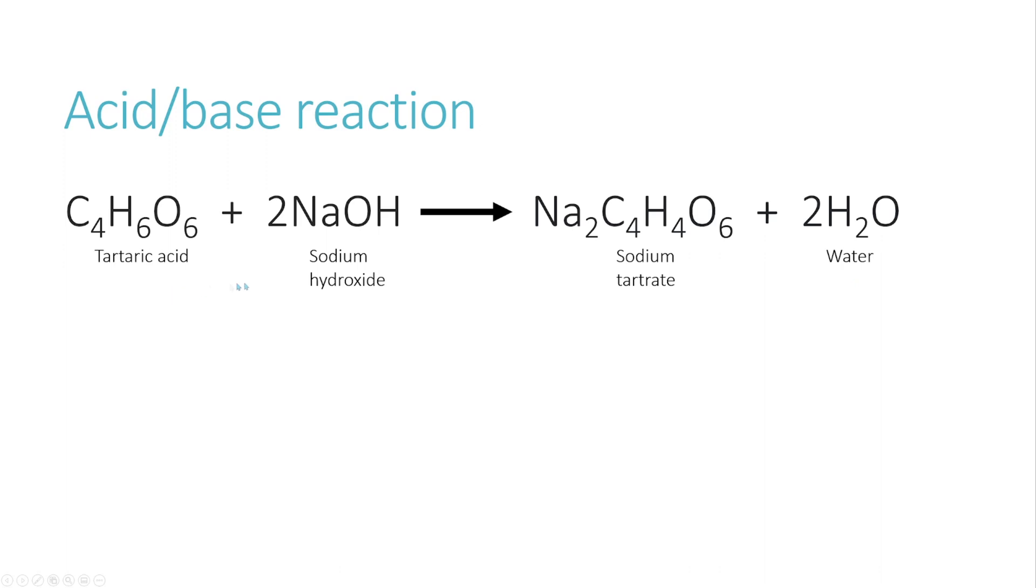Now, the important thing to note here is that for this reaction to complete, we need two molecules of sodium hydroxide for every one molecule of tartaric acid. The reason for this is tartaric acid is diprotic. When in solution it releases two hydrogen ions. Therefore, to react with both of those hydrogen ions, we need two molecules of sodium hydroxide. This plays an important role in the calculation of the TA.